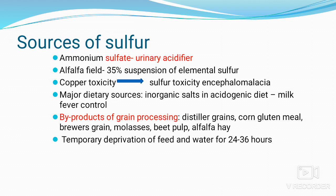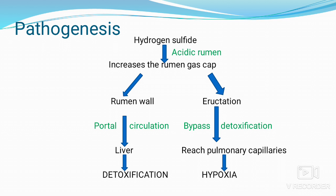Ammonium sulfate used as a urinary acidifier can also cause PEM. Alfalfa feed sprayed with 35% elemental sulfur has been associated with sulfur toxicity and encephalomalacia. Copper toxicity decreases hepatic function and increases plasma concentrations of sulfur-containing amino acids, predisposing to PEM. Major dietary sources include inorganic sulfate salts fed as acidogenic diets to prevent milk fever around parturition. Byproducts of grain processing high in sulfur include distillers grains, corn gluten meal, brewers grains, molasses, beet pulp, and alfalfa hay. Temporary deprivation of feed and water for 24 to 36 hours followed by sudden exposure to high-sulfate water also predisposes animals to PEM.